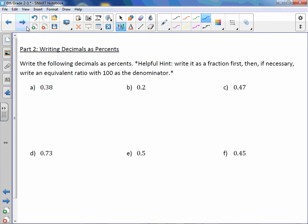Let's go the other way around. Write the following decimals as percents. Helpful hint: write it as a fraction first, then if necessary, write an equivalent ratio with 100 as the denominator. We want 100 because percents are out of 100. So letter A is 38 hundredths - 38 over 100. Is your denominator 100? It is. Therefore your answer is simply the numerator, or 38%. You must put the percent symbol, otherwise it's incorrect.